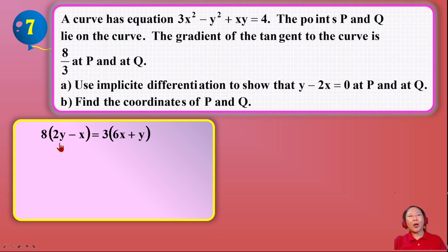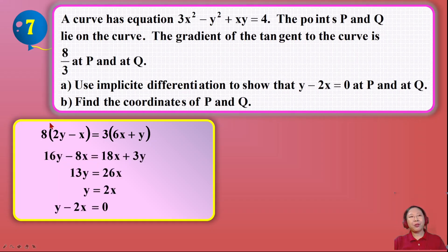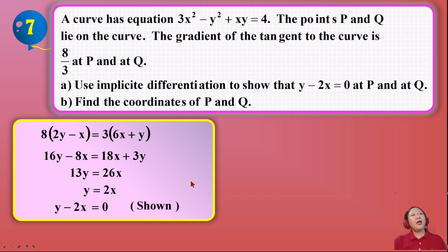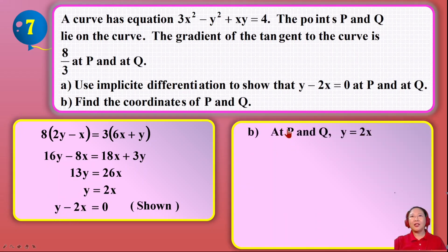Rearranging the gradient equation — multiplying through and simplifying — we get y minus 2x equals 0, which is exactly what was needed, so that is shown. The question then asks us to find the coordinates of P and Q, so from y minus 2x equals 0 we know that y equals 2x.